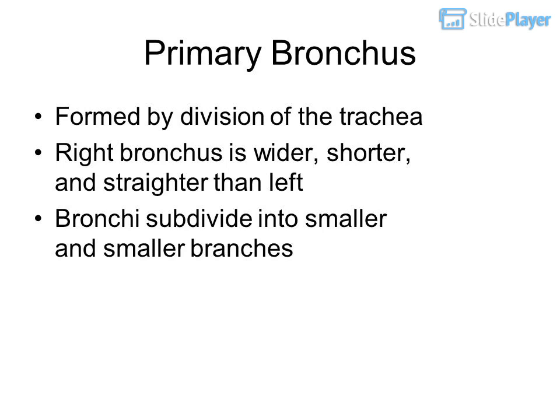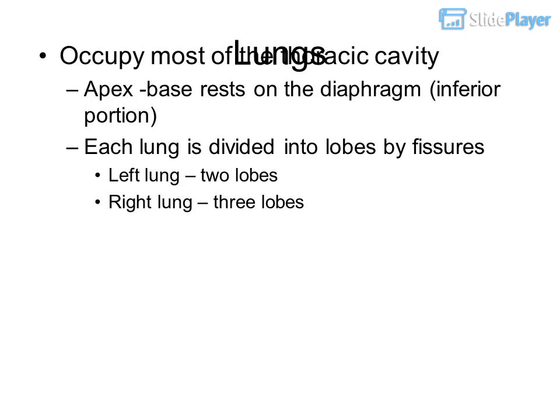The primary bronchi are formed by division of the trachea. The right bronchus is wider, shorter, and straighter than the left. Bronchi subdivide into smaller and smaller branches. The lungs occupy most of the thoracic cavity; the apex base rests on the diaphragm at the inferior portion. Each lung is divided into lobes by fissures — the left lung has two lobes and the right lung has three lobes.